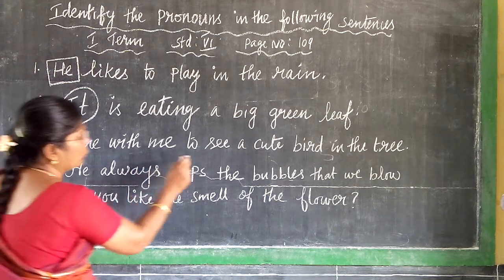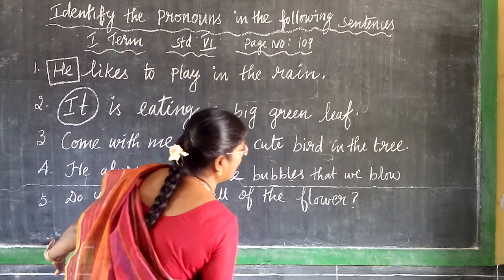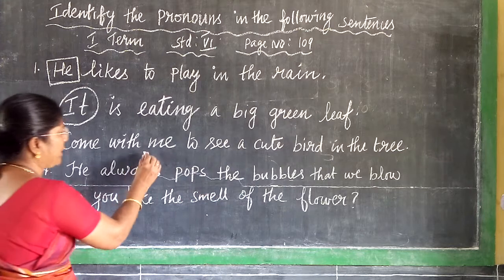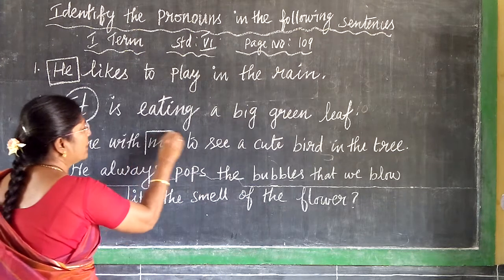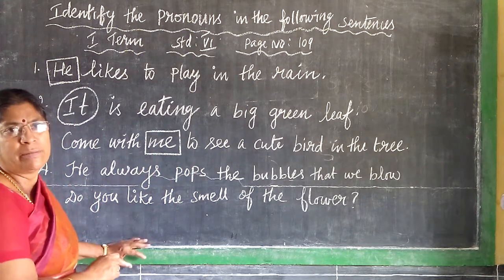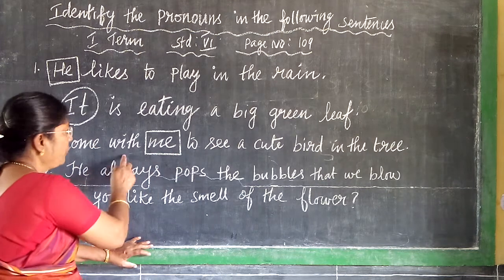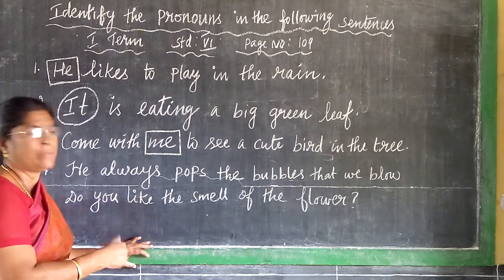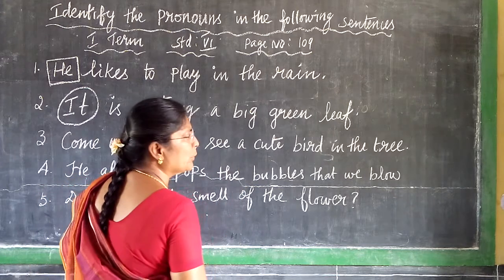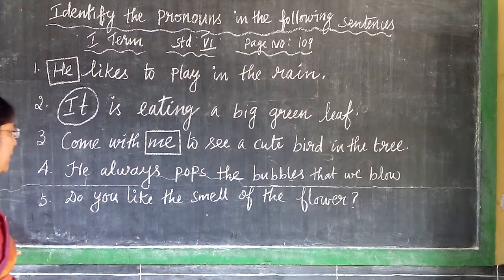Come with me to see a cute bird in the tree. So, come with me — the word me is a pronoun. The word me is a pronoun. Come with me, so the word me is a pronoun. To see a cute bird in the tree.